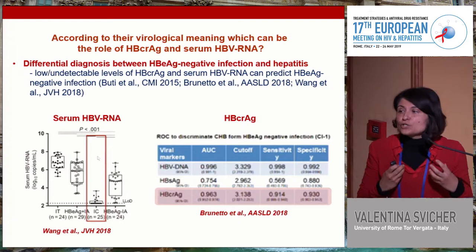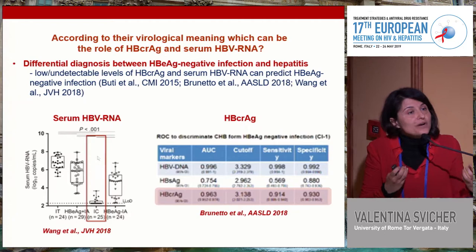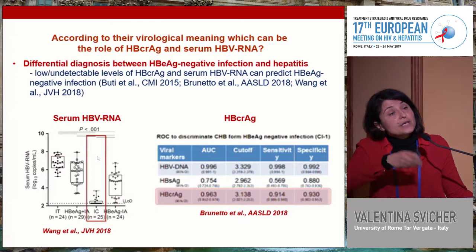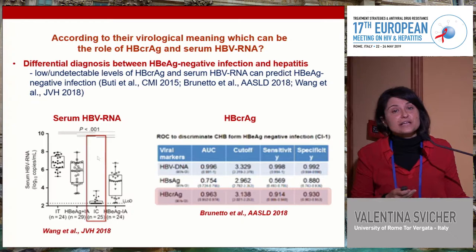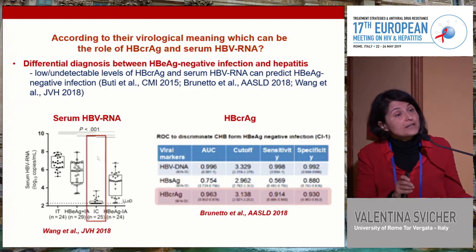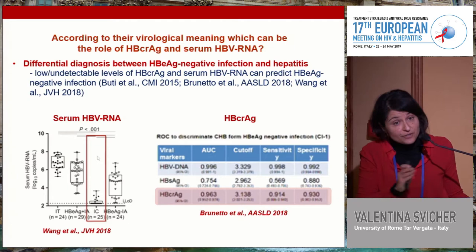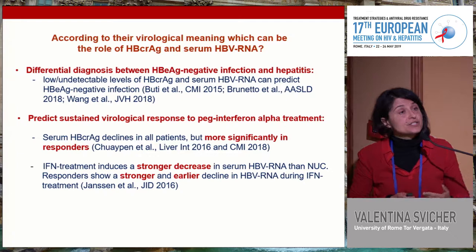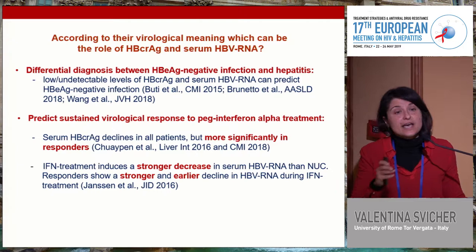What is the clinical positioning of these biomarkers? Different studies have shown that the levels of these biomarkers vary during the natural history of chronic HBV infection, reaching their lowest level in HBeAg-negative infection. For this reason, they have been proposed to predict the differential diagnosis between HBeAg-negative infection and HBeAg-negative hepatitis. Furthermore, since interferon-alpha can reduce cccDNA transcriptional activity, these biomarkers have been proposed to predict sustained virological response to this drug.